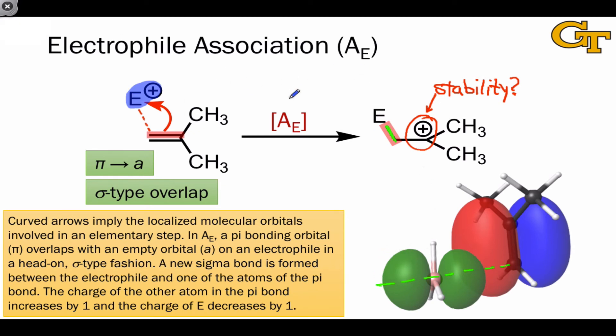Important electrophiles that you'll see involved in A_E or A_E type steps are H+, or even the corresponding strong acids, something like HCl, which is a little bit more complicated than our example A_E here, but is the same basic idea.